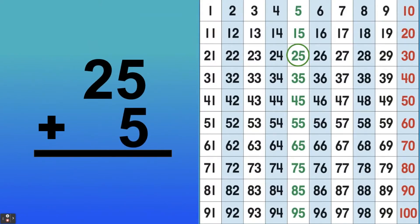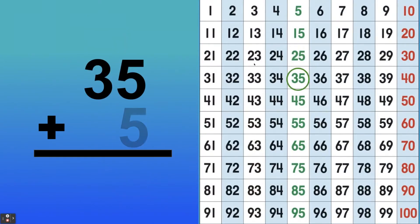Let's try another one: 25 plus 5. This would be the same as a quarter plus a nickel. 25 plus 5 equals 30. Here's 25 — count up 5: 1, 2, 3, 4, 5 — and it's 30. What's 35 plus 5 going to be? We know that 5 plus 5 is 10, and 3 plus 1 is 4. So 35 plus 5 is 40.